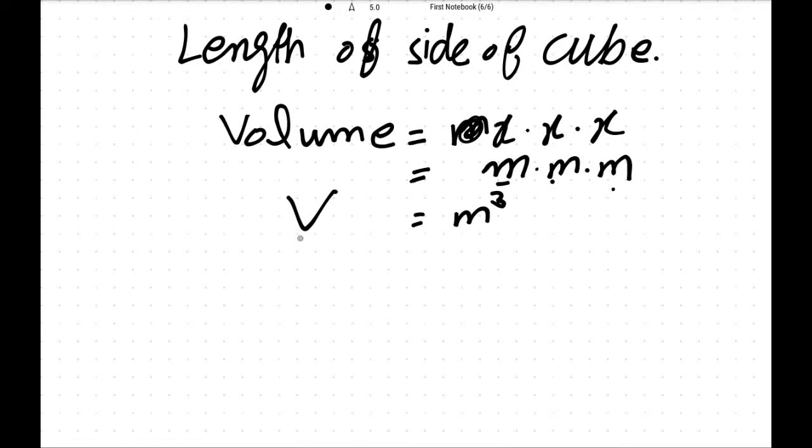V is volume, so volume is given. What is volume? Zero point zero zero six eight four meter cube.